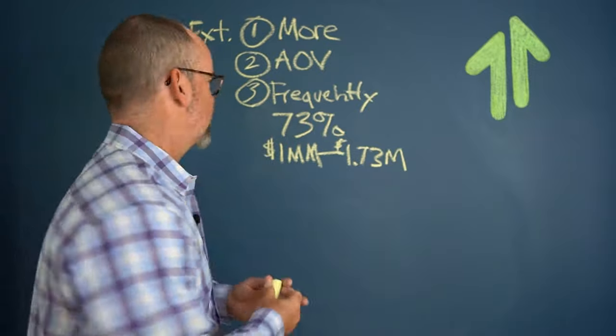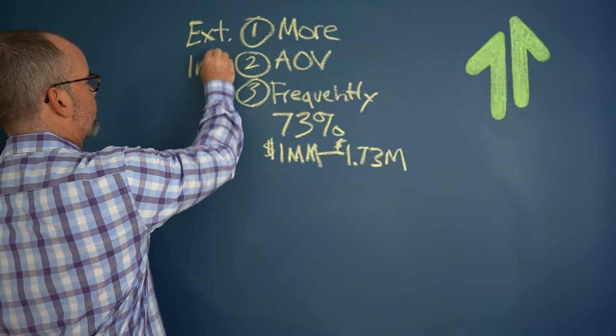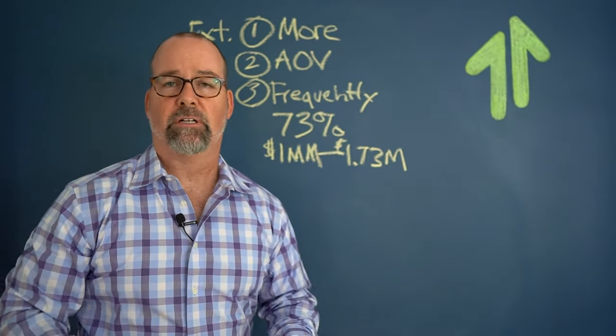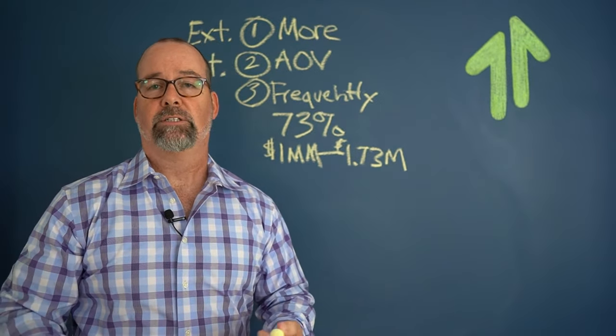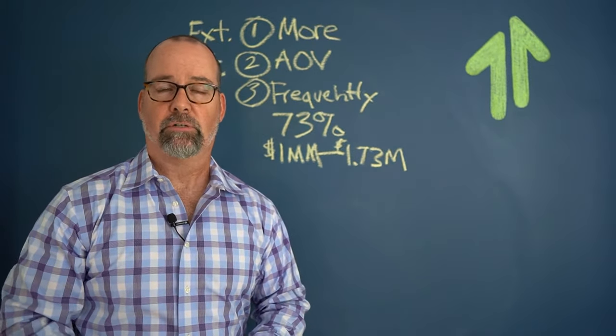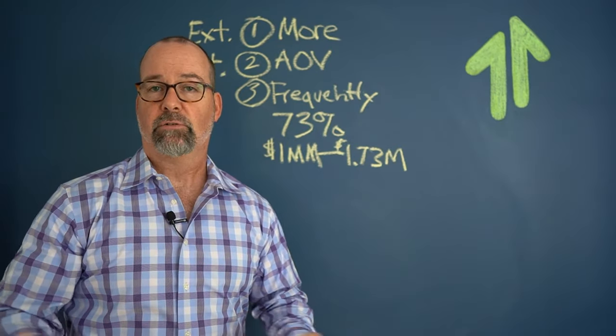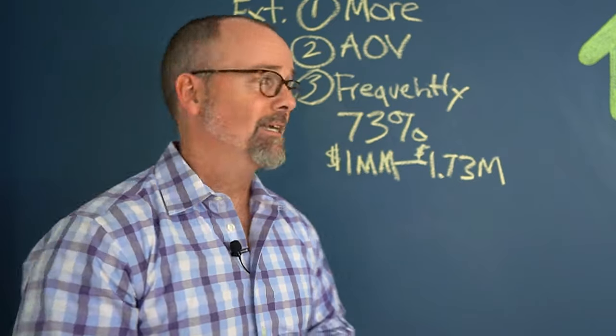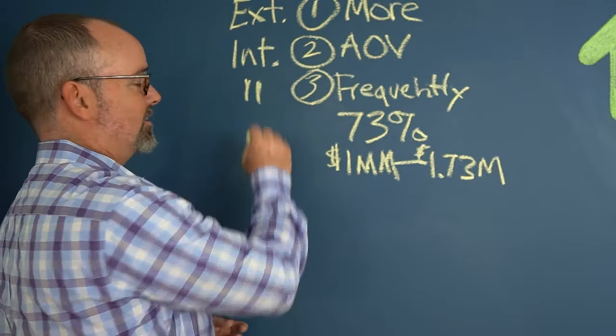The second two are actually internal. Because average order value is a function of how much they buy when they actually go to your store, or how much they buy over the course of time. Now the third thing is how do you get them to buy more frequently? That also is an internal problem.